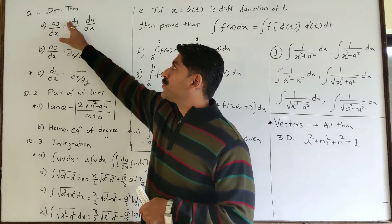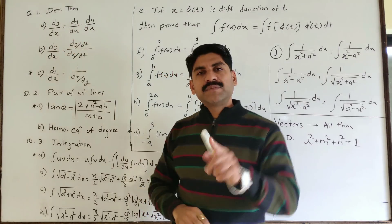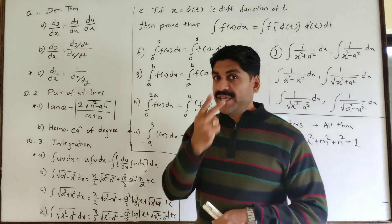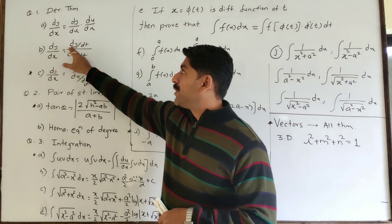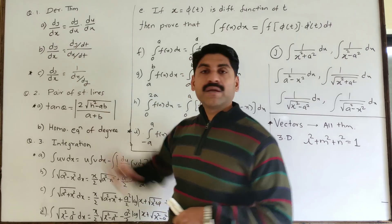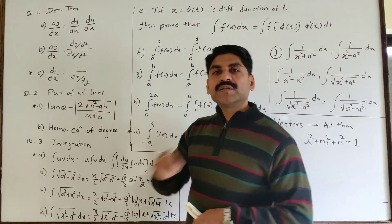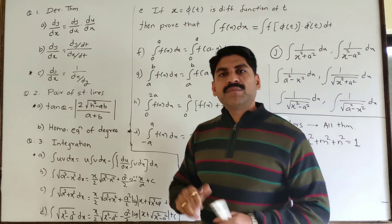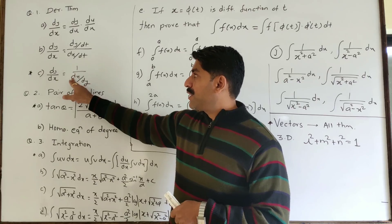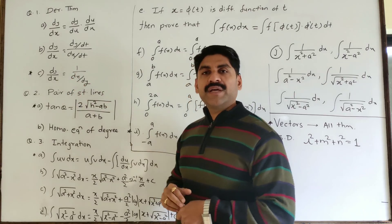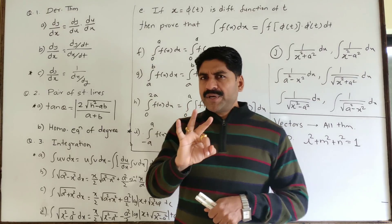There are only three theorems to cover. The first theorem is the chain rule: dy by dx equals dy by du dot du by dx. The second theorem is for parametric equations: dy by dx equals dy by dt upon dx by dt. The third theorem is: dy by dx equals 1 upon dx by dy. These are the three important theorems.